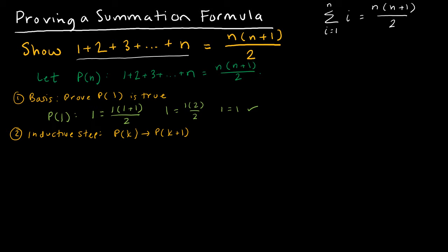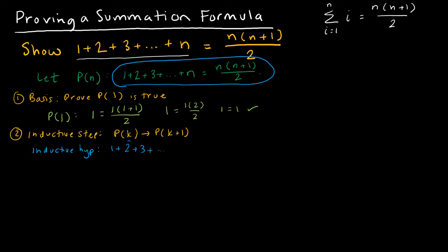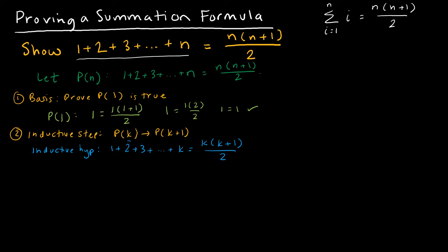So there are two parts to this. I'm going to start by writing the inductive hypothesis — you always have to write that. The inductive hypothesis is going to be exactly what p of n was, except we plug k in instead. So the inductive hypothesis is that 1 plus 2 plus 3 all the way through k is equal to k times k plus 1 divided by 2. So I'm assuming p of k is true.